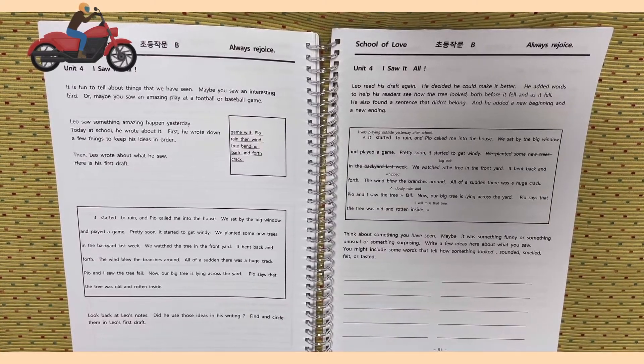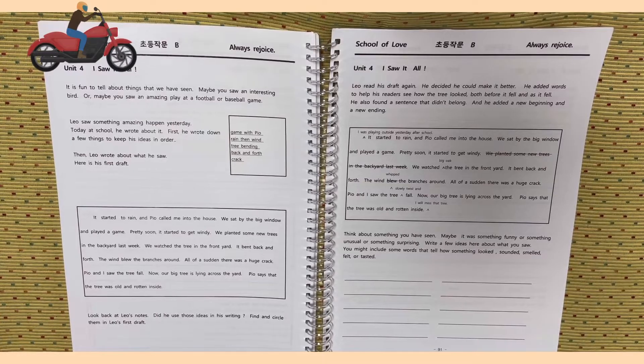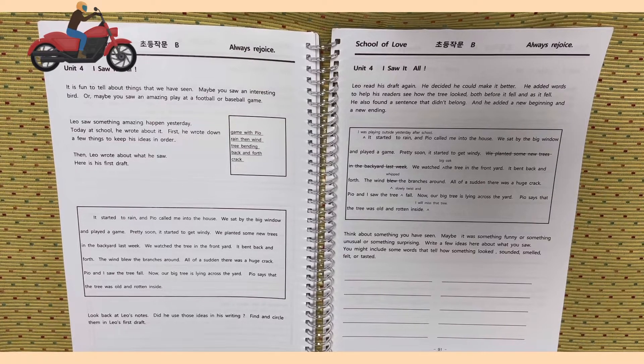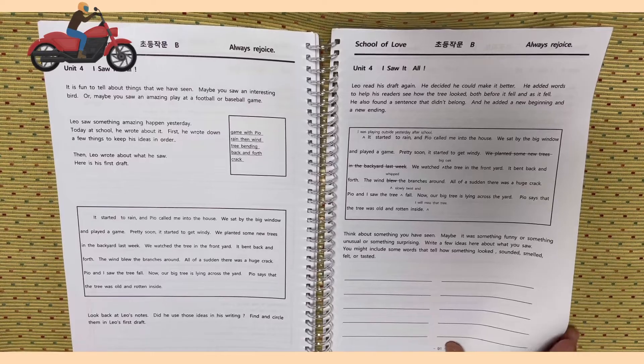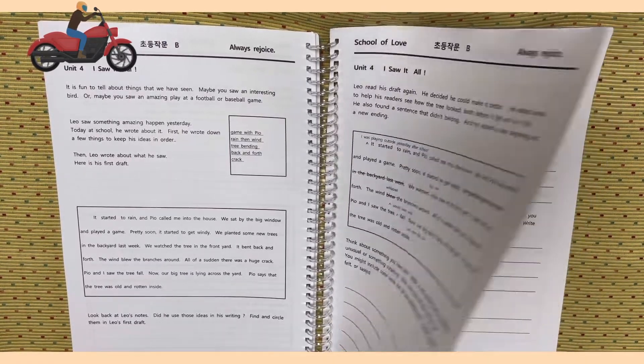Think about something you have seen. Maybe it was something funny, or something unusual, or something surprising. Write a few ideas here about what you saw. You might include some words to tell how something looked, sounded, smelled, felt, or tasted.